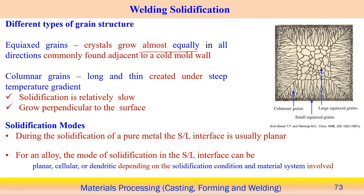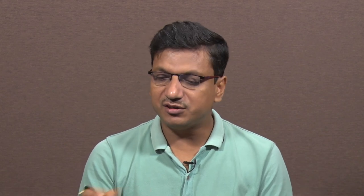It entirely depends on the way the heat is extracted and the temperature gradient at a particular position. Since there is some interface, at the interface in a casting process, we find an equiaxed structure. Once equiaxed structure forms, then we can see a particular one-directional growth. That directional growth follows the steepest temperature gradient, and usually the columnar kind of structure forms as the next step. From the figure also, we can see the columnar grains usually form in this particular case.